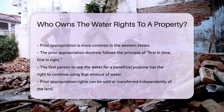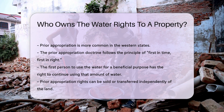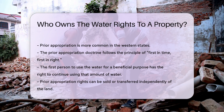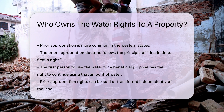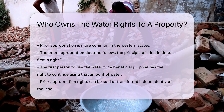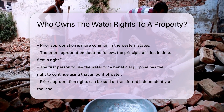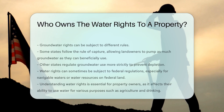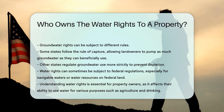Additionally, groundwater rights can be subject to different rules. Some states follow the rule of capture, allowing landowners to pump as much groundwater as they can beneficially use. Other states regulate groundwater use more strictly to prevent depletion.